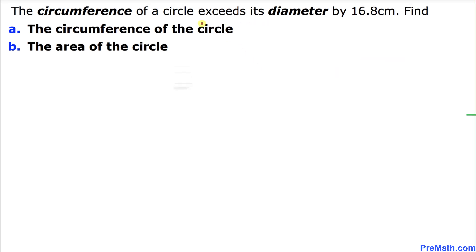Let's look at this problem once again. It says the circumference of a circle exceeds its diameter by 16.8 cm. That means the circumference minus the diameter equals 16.8 cm, where C is our circumference and D is our diameter.